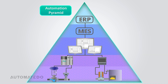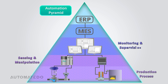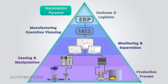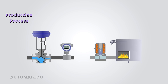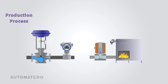The Automation Pyramid is a five-tier framework that organizes industrial processes. Its levels are: production process, sensing and manipulation, monitoring and supervision, manufacturing operation planning, and business and logistics. Let's explore each level in detail and uncover how this model transformed factories worldwide.